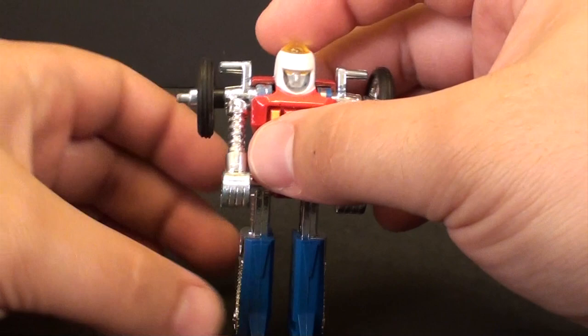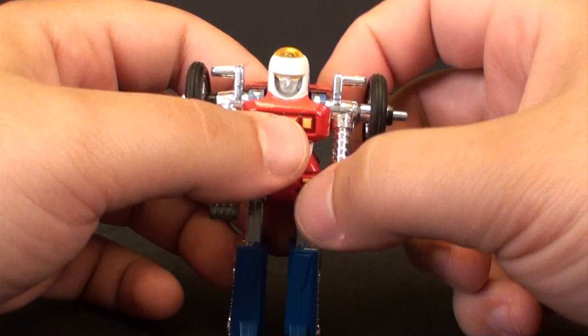And there you go, there's Cy-Kill. There's not much to say about him, the only thing you can do is move his arms 360, and that's about it.